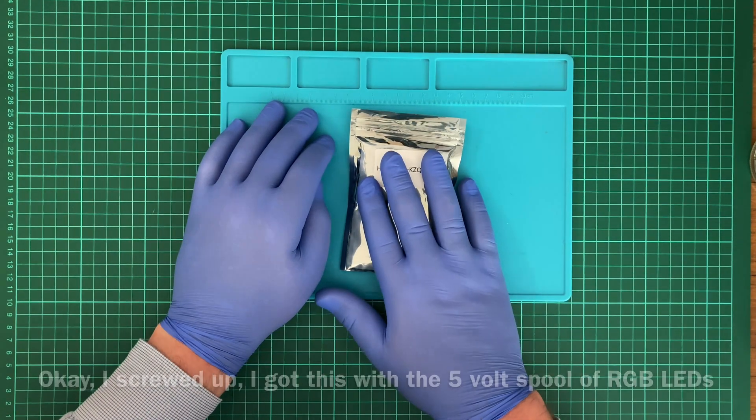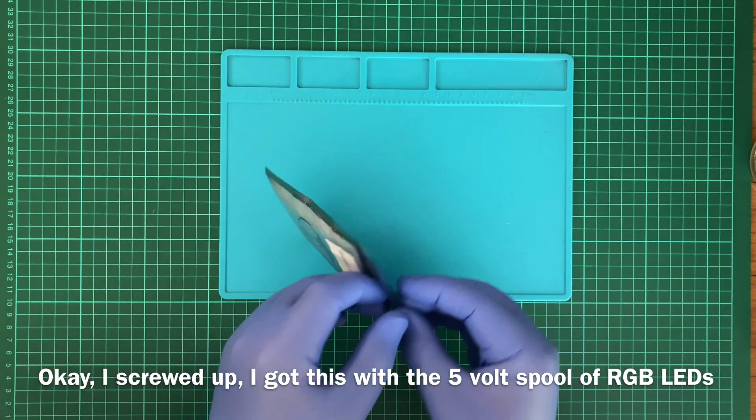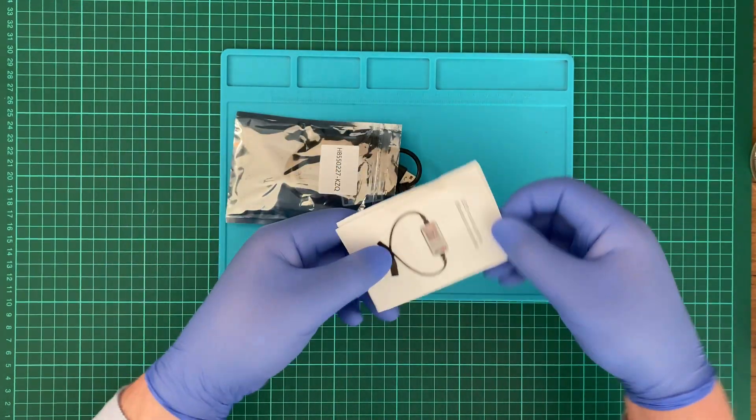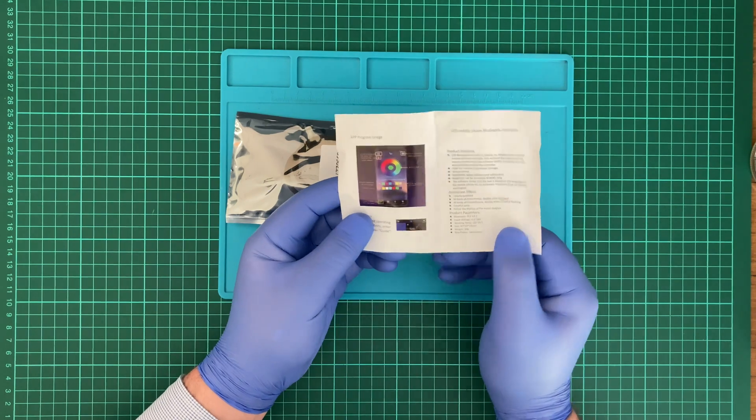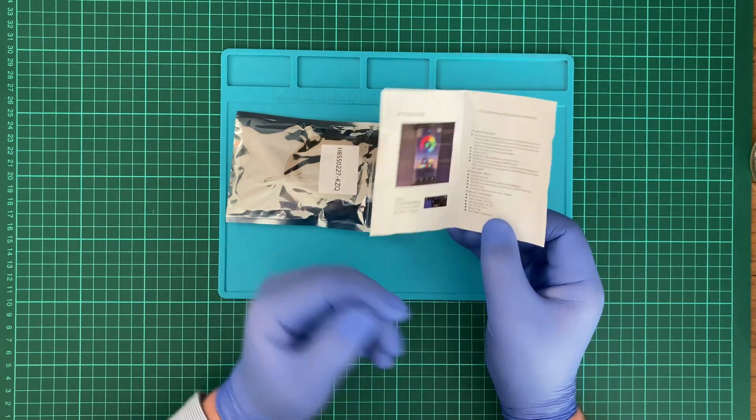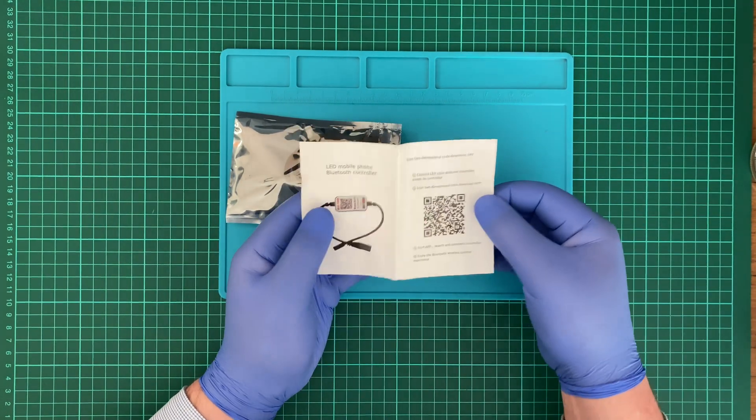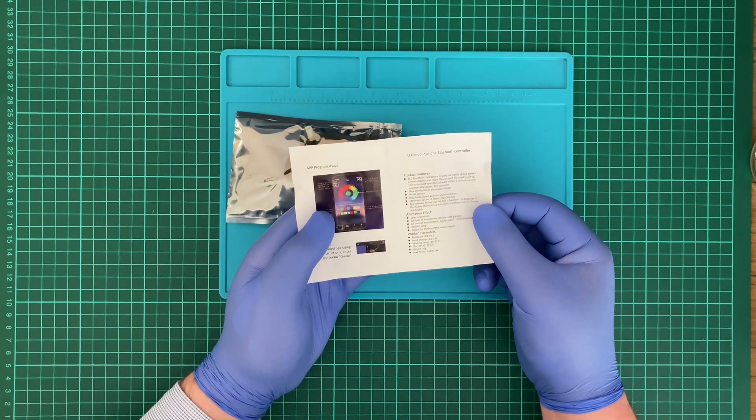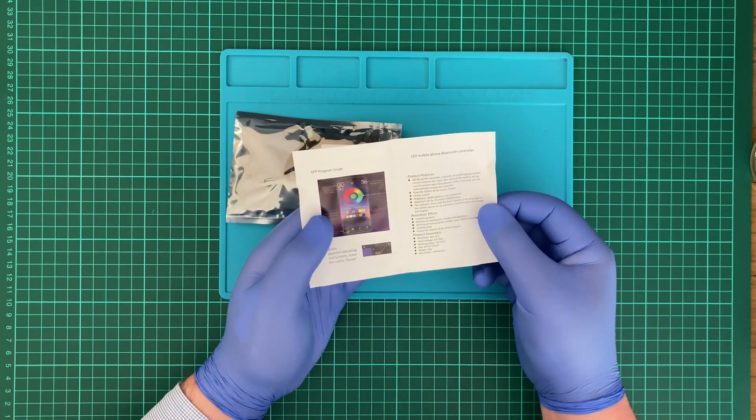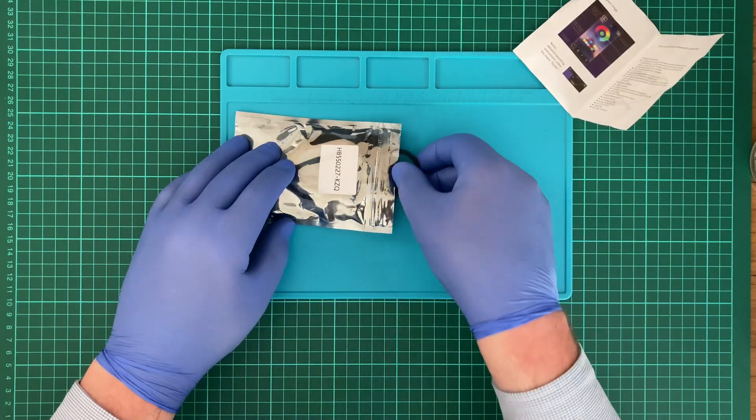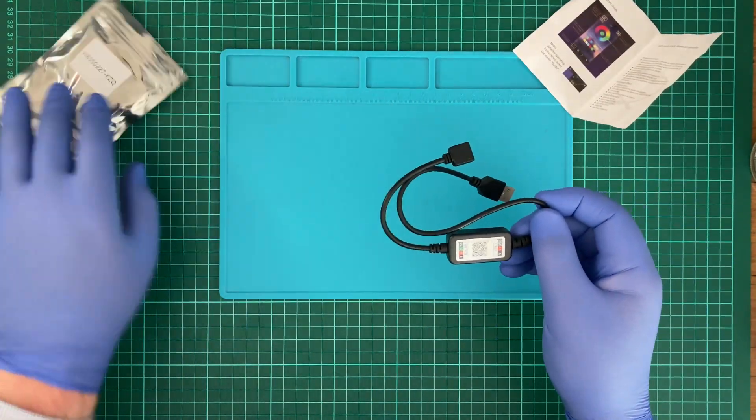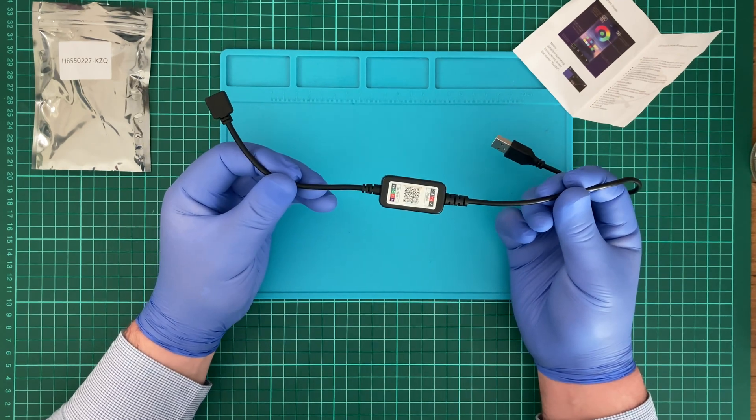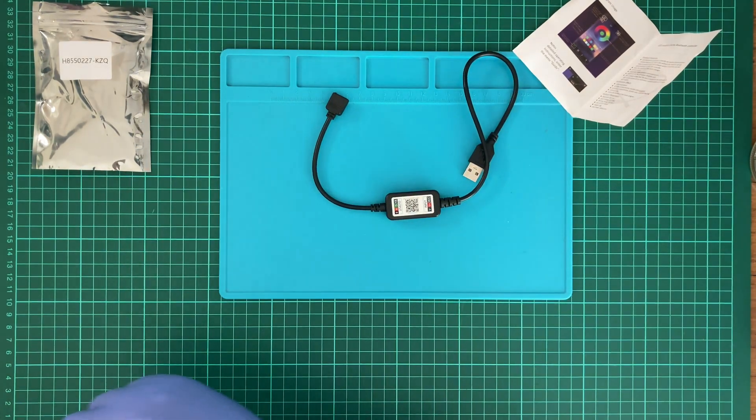And I got this instead, which is the Bluetooth adapter. So, I haven't installed the app, but when I fire it up, it does its own little thing. And I'm really not that interested in using it. I want to hook these things up to an Arduino instead and do it that way. But yeah, so I was kind of curious, what's inside this thing? How about we find out?